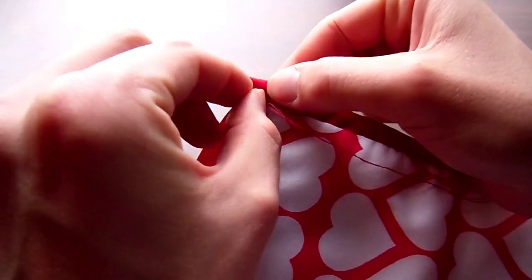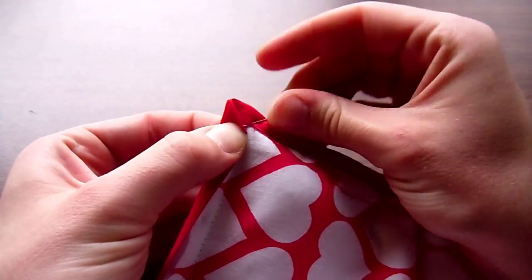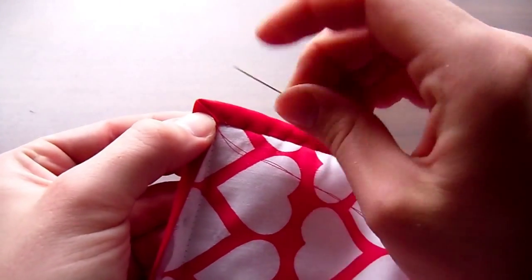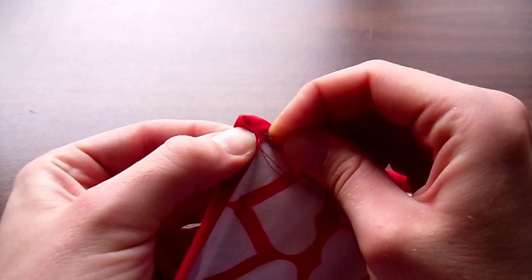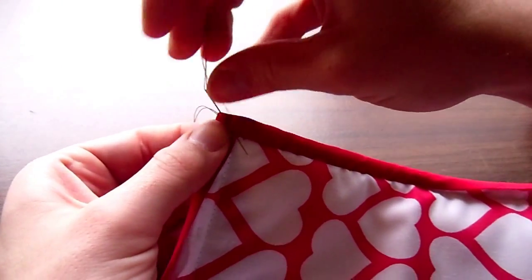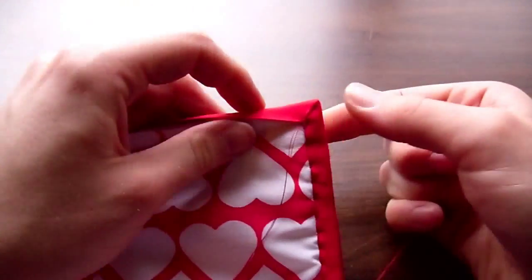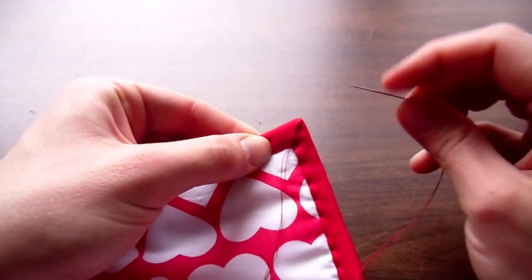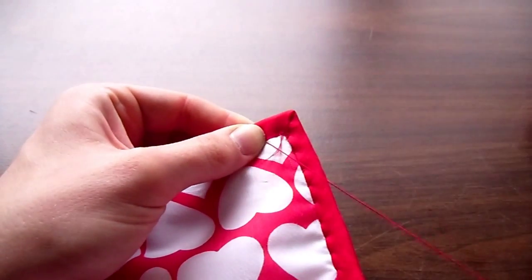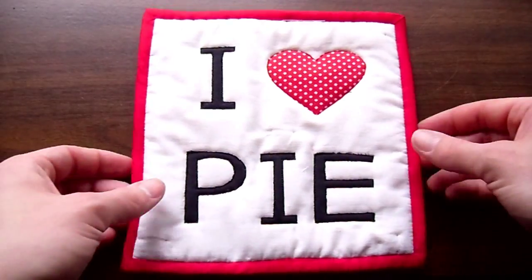And this is how to stitch at the corners. Here's the potholder once the binding has been sewn.